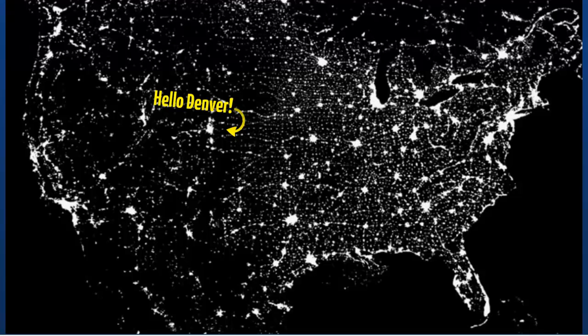Our entire modern culture depends on the availability of dependable, affordable electricity. Alternating current provides us with it. That is why its invention was the paramount development of modern technology. Thank you for listening. I hope you forgive my little missteps and I hope you enjoyed my presentation. Thank you.